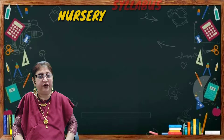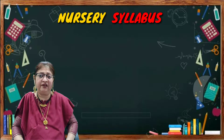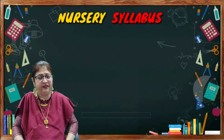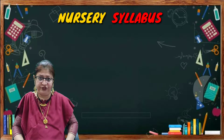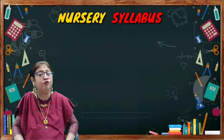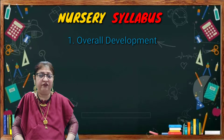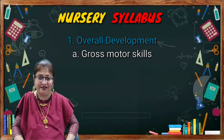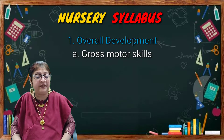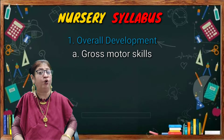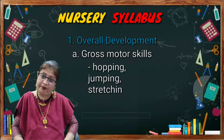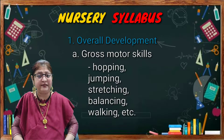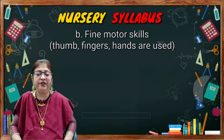The correct age for nursery is three to four years. Let us begin with the nursery syllabus. First comes overall development, in which we are going to learn different types of methods. The first is gross motor skills. Gross motor skills include hopping, jumping, stretching, balancing, and walking.